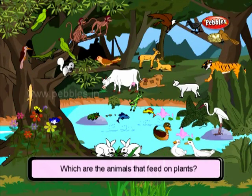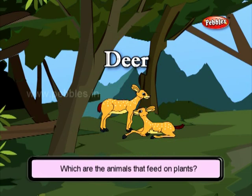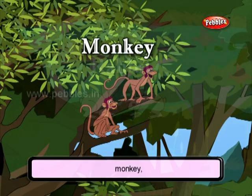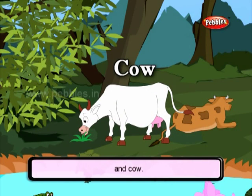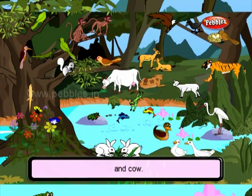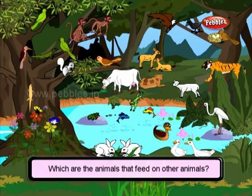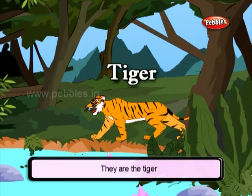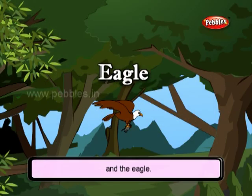Which are the animals that feed on plants? They are the deer, goat, monkey, rabbit and cow. Which are the animals that feed on other animals? They are the tiger and the eagle.